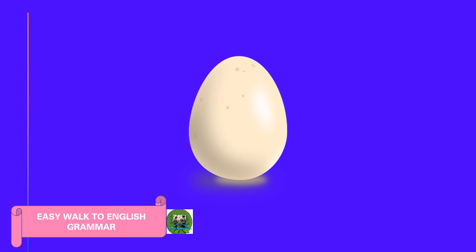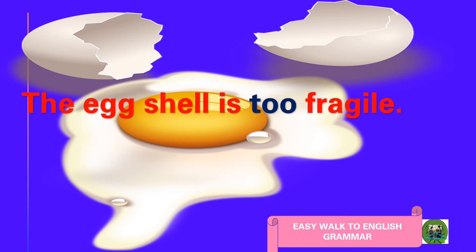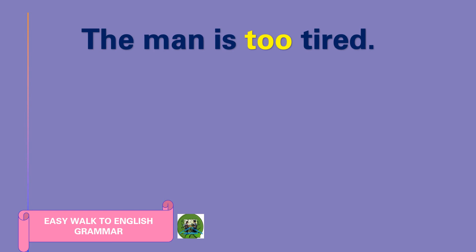What can we see? An egg — oh, it broke! The egg shell is too fragile — easily breakable. We are going to deal with the adverb of degree 'too.' Example: 'The man is too tired; he cannot walk.' The adverb of degree 'too' is placed just before the word it modifies — the adjective 'tired' — and it gives us a negative sense.